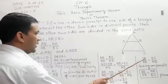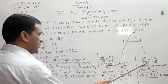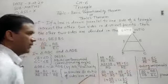This becomes 1 and this also becomes 1. This 1 and 1 cancel. Now, you get DB upon AD is equal to EC upon AE.